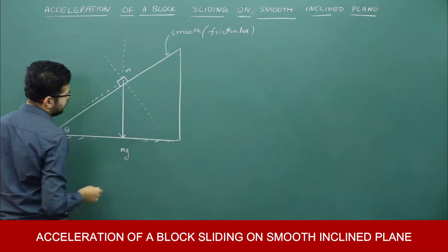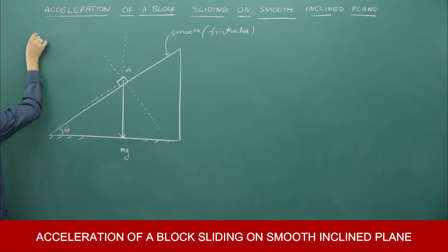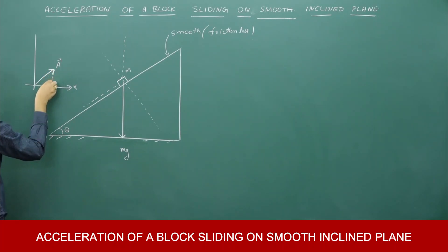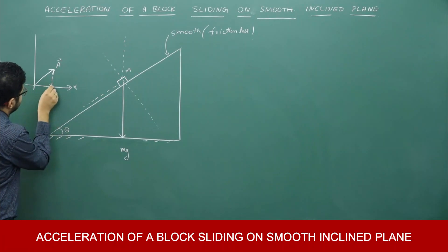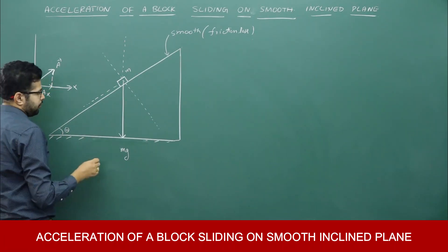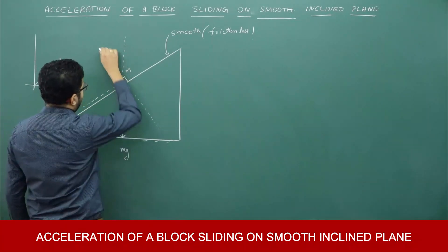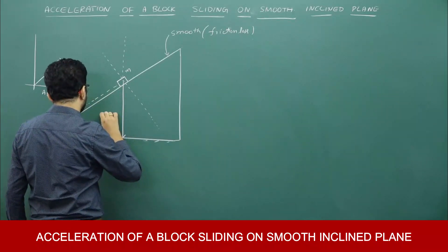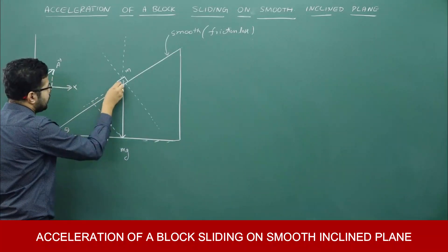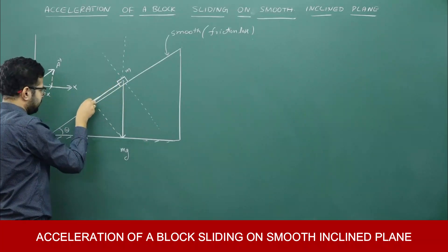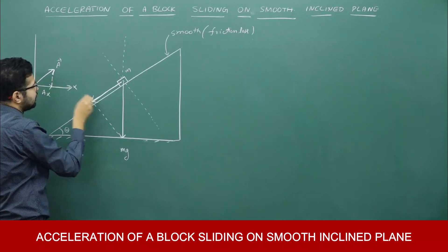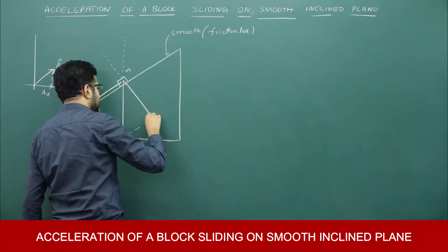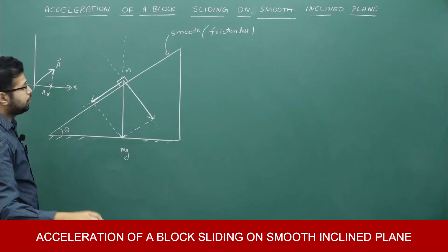How to find the component of a vector: if there is a vector a, to find the component along the x-axis we drop a perpendicular from the head of the vector onto the x-axis — that gives the x component. Similarly, to find the component of mg along the inclined plane, we drop a perpendicular from the head of the vector onto the inclined plane line. This gives the component of mg along the inclined plane, and the other projection gives the component perpendicular to the inclined plane.